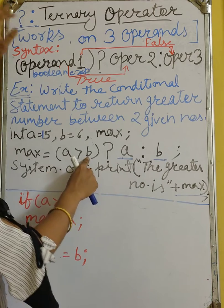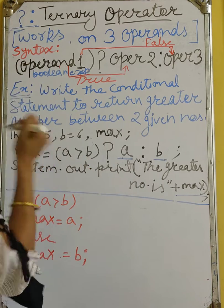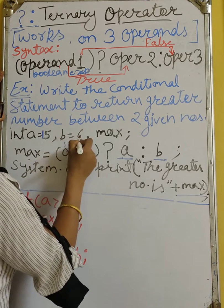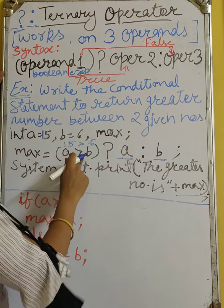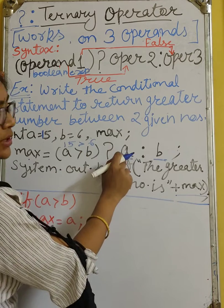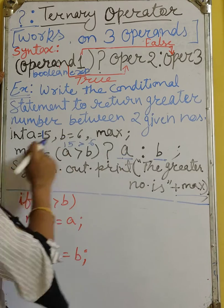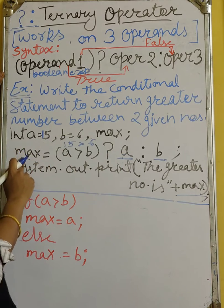Now see, if A greater than B, example is A is 15 and B is 6. So 15 greater than 6, condition is true. If this condition is true, then it will return A. Means value of A. A is what? 15. So max is what? 15.